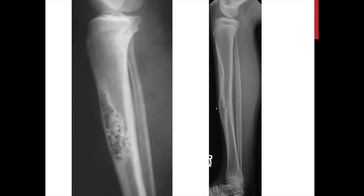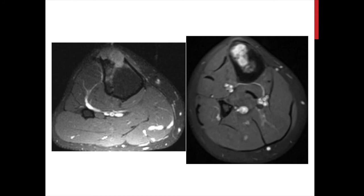Here's an example on the left of a large adamantinoma in the anterior cortex of the tibia, and osteofibrous dysplasia in a child on the right. Radiographically they look almost identical, but one key difference is open growth plates on the right and closed growth plates on the left. On advanced imaging — fat-saturated T2 — you see preferential involvement of the anterior cortex, relative sparing of the intramedullary canal, bright signal intensity, cortical expansion, and possible cortical disruption. Even on MRI these are very difficult to distinguish.